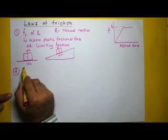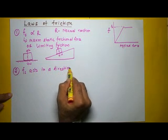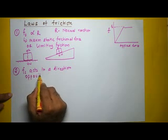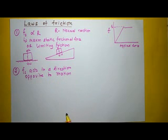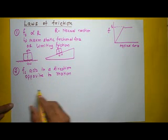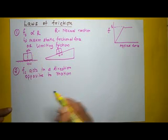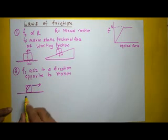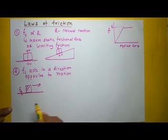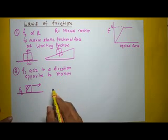The second law says that Fs acts in a direction opposite to motion. This is very easy to understand. If you have a surface on which the block is moving, and the block is moving in a particular direction, then the frictional force will act in the opposite direction. So friction always opposes the motion, which we know by intuition. This is the second law.